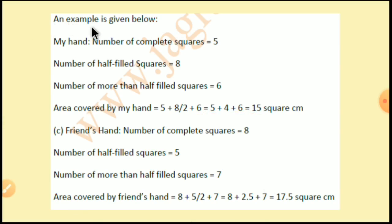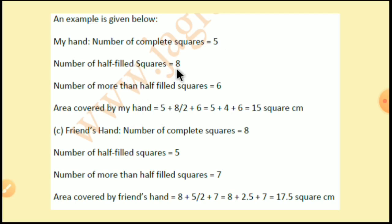Suppose my hand — number of complete squares: 5, number of half filled squares: 8, number of more than half filled squares: 6. तो area covered by my hand: complete squares 5, plus half filled 8 divided by 2 equals 4, plus more than half 6. So 5 plus 4 plus 6 equals 15 square centimeters.